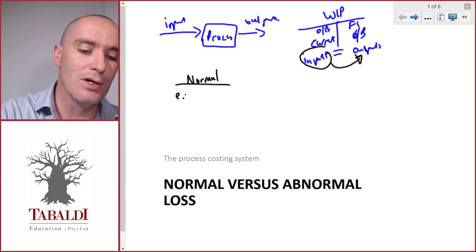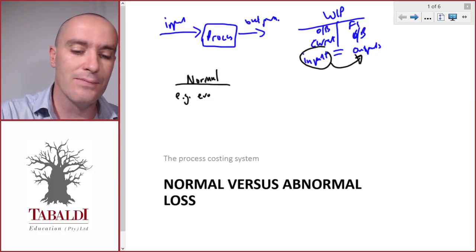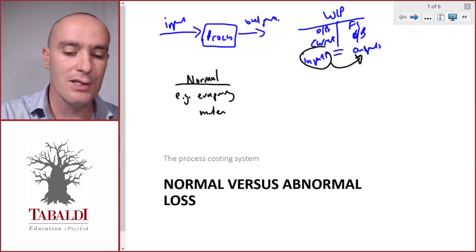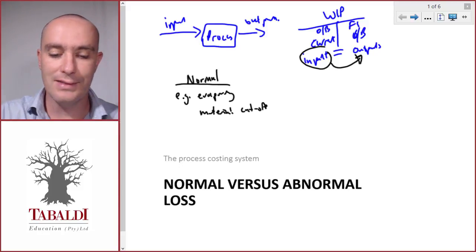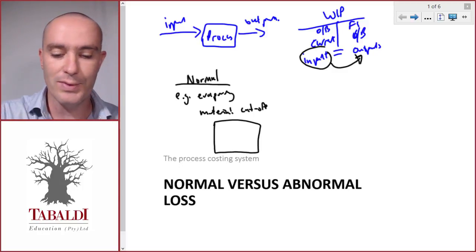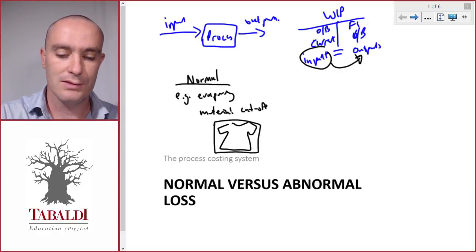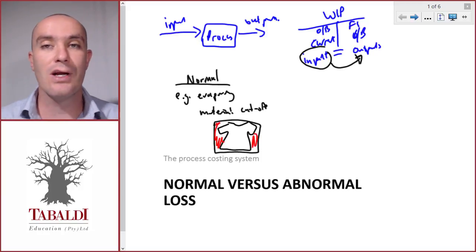Examples of normal losses are like evaporating chemicals or material cut-offs. Think of making a dress. We have the sheet of material and we cut out the dress, and all the off-cuts have to be thrown away.